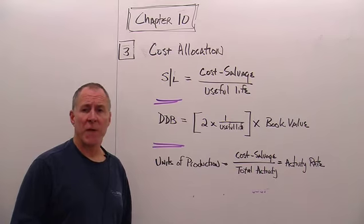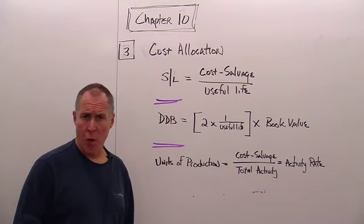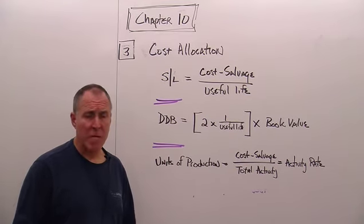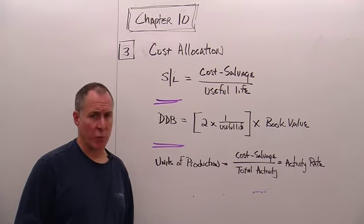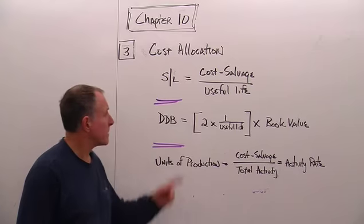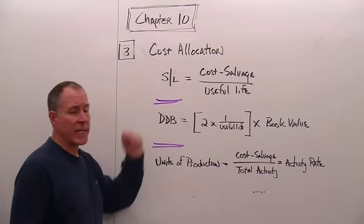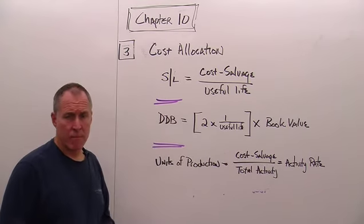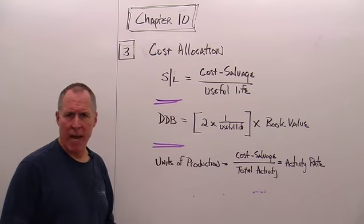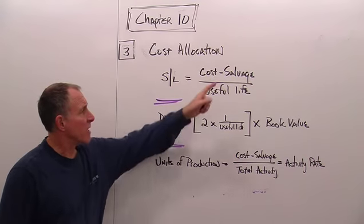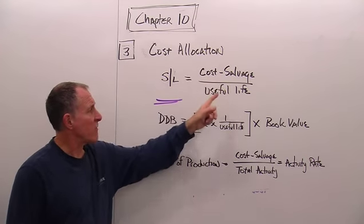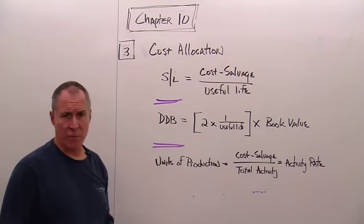How much we allocate to each year depends on the method of depreciation we use. There are three methods our textbook looks at. The first is straight line — we take the cost less the salvage over the useful life.